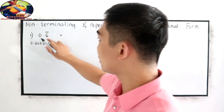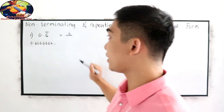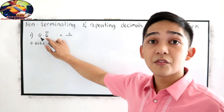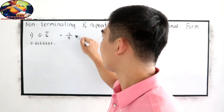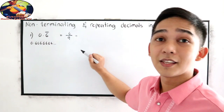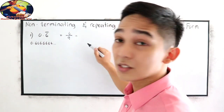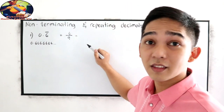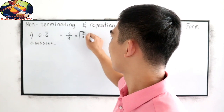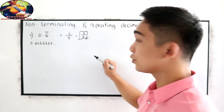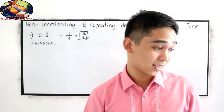The shortcut: copy the repeating digit 6 as the numerator, and instead of writing 0, we use 9 as the denominator. So that gives us 6 over 9. In simplest form, both are divisible by 3, giving us 2 over 3. And 2 divided by 3 in a calculator gives 0.666666.